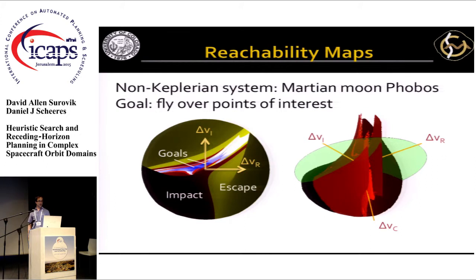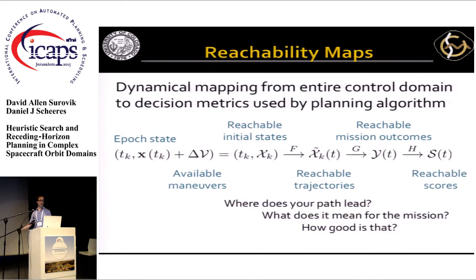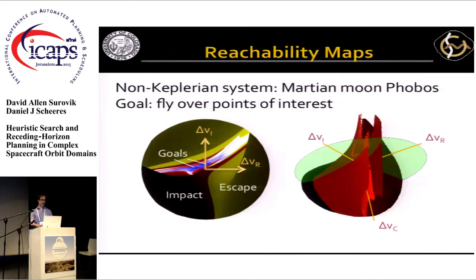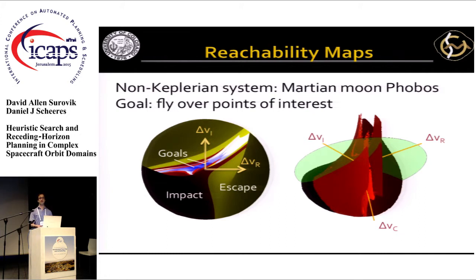To show how crazy things get with strongly non-Keplerian systems, I've generated the same kind of plot for an orbiter around Phobos. You see a much more complicated shape to the impact and escape regions. If you increase the time horizon, those safe regions continue to fill in with different failure regions and the shape becomes more and more complex. I've also included some goal regions — those signify that the spacecraft has flown through certain observation windows close to target points defined for observation. On the right is a chunk from a full 3D reachable set.